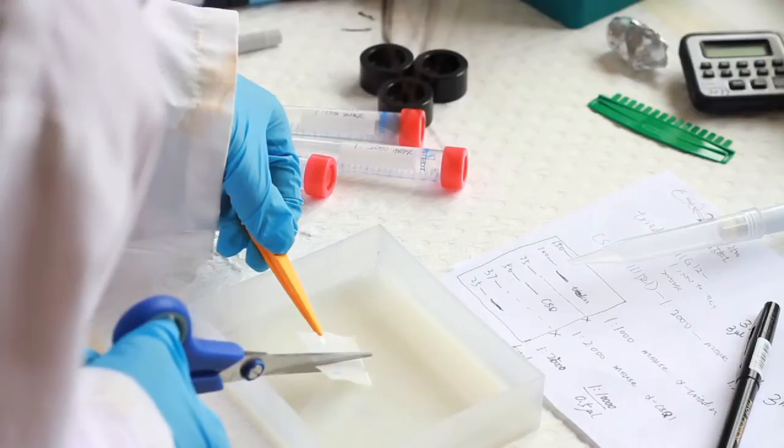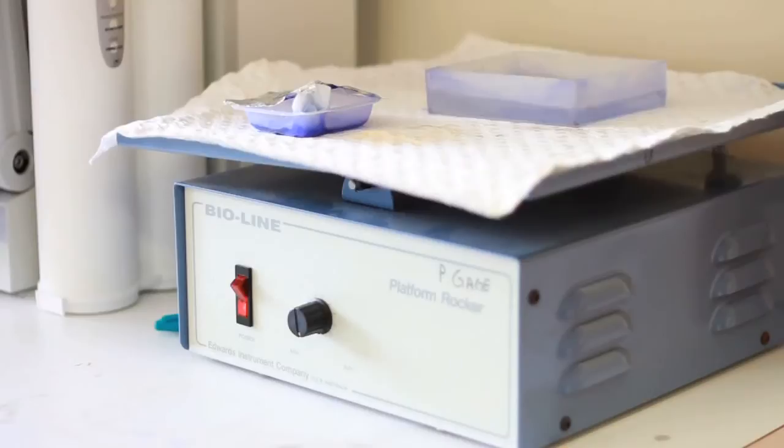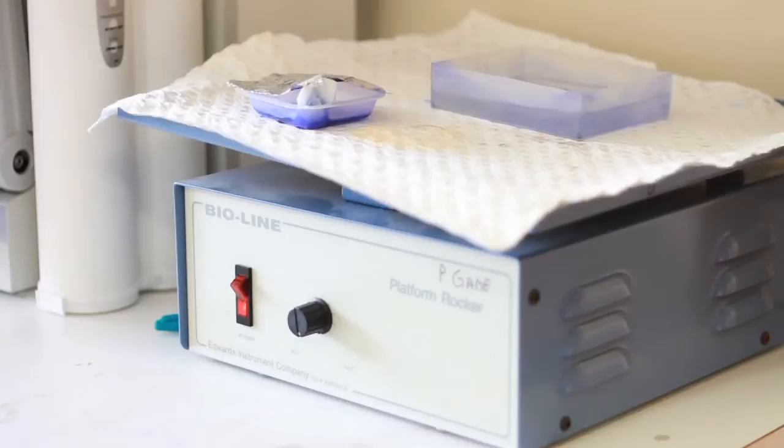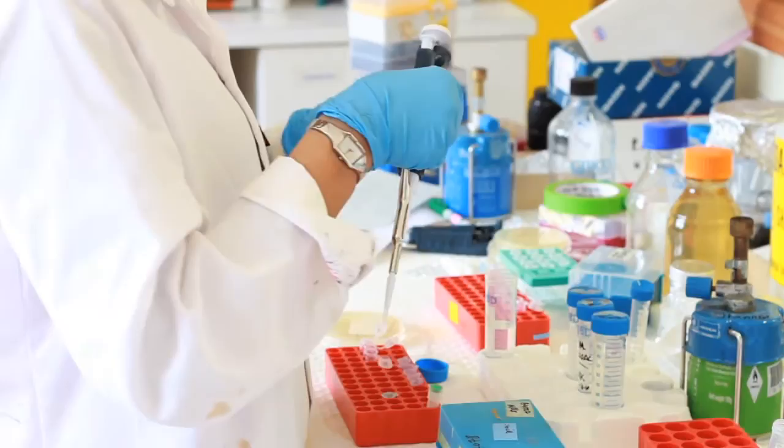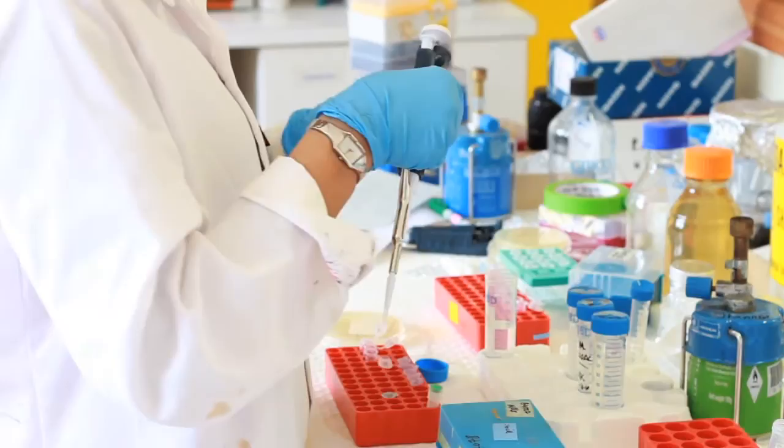We're doing similar experiments but focusing more on changes in amino acids which lead to heart disease. In a protein that's got say 500-600 amino acids, a change in just one of those can give you heart failure. We want to know how that amino acid affects the structure of the protein.